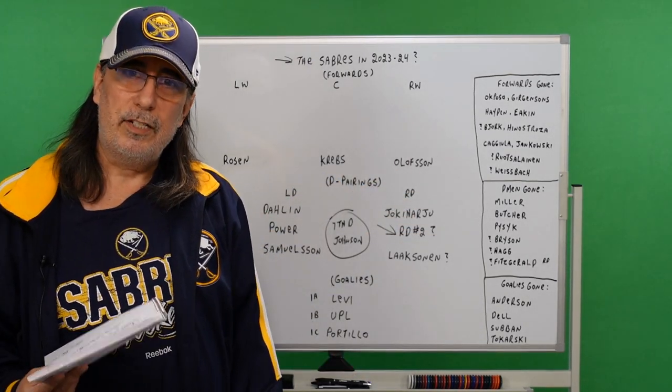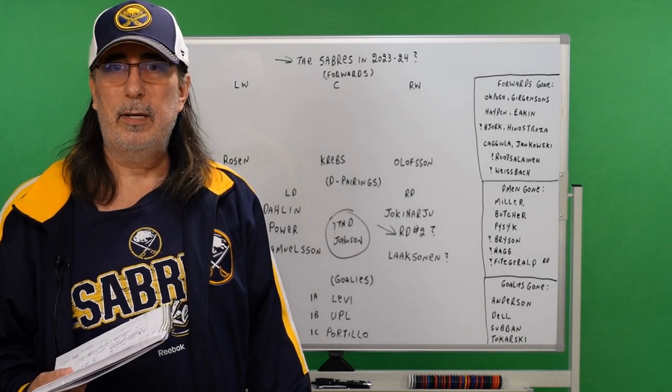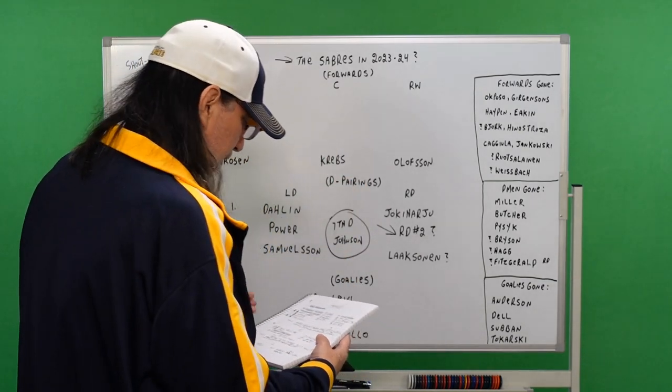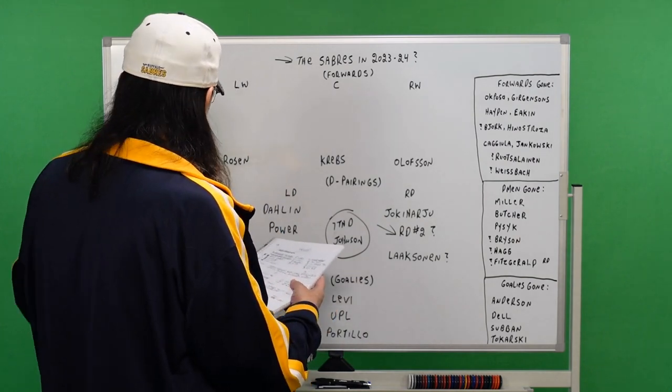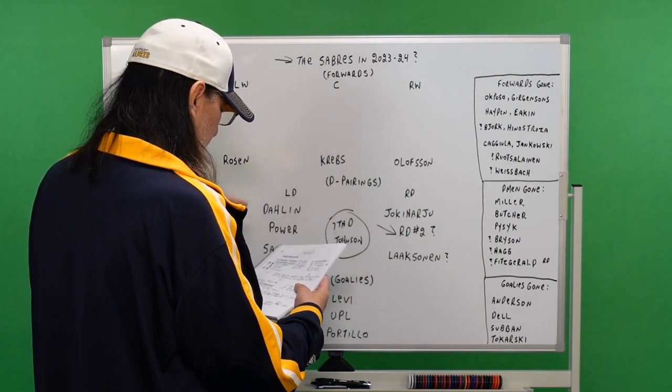I got Peyton Krebs as our fourth line center. Calm down, calm down. This will make sense in a sec because I'm going to explain it at the very end why. And on our right side, I got Victor Olofsson. So I got Rosen, Krebs, and Olofsson. Now guys, think about that. That's our fourth line. Tell me things aren't looking brighter as I move up the scale here. Just by looking at that, you know?